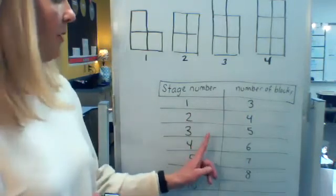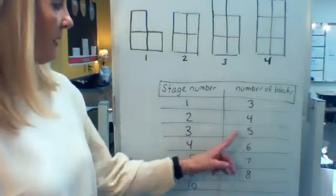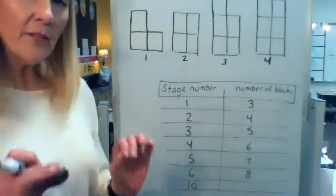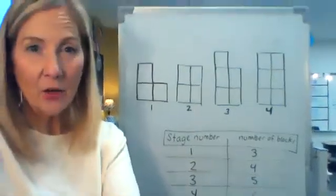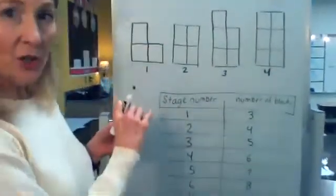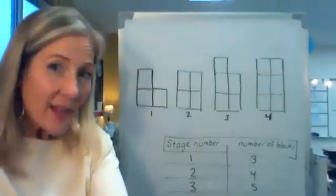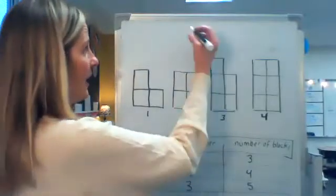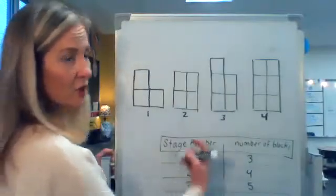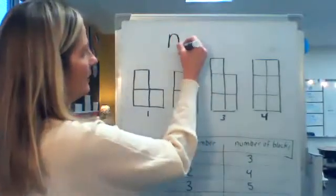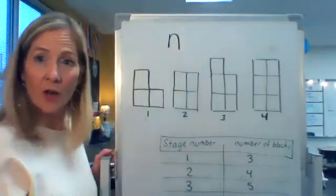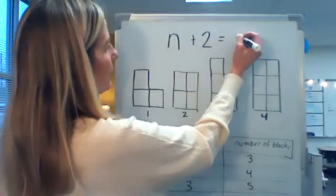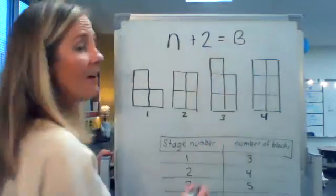So it looks like it might be stage number plus two gets the number of blocks. Let's test it. Stage number plus two gets number of blocks. And even the ones we continued, that works. So if that works consistently, I can create an expression from the data that will help me figure out the blocks for any stage. And my expression for this relationship would be N, which stands for stage number, plus two equals the number of blocks.